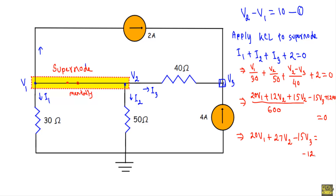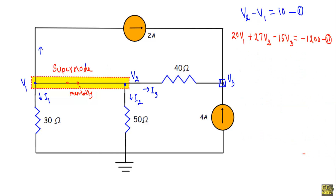Simplifying the KCL equation for the supernode: 20·V1 + 27·V2 − 15·V3 = −1200. This is equation number two. Together with equation one (V2 − V1 = 10), we now have two equations.